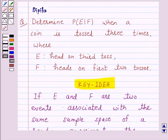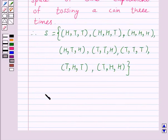Now according to the question, E is the event that head on third toss and F is the event heads on first two tosses. So E is equal to head on third toss, that is HHH, HTH,